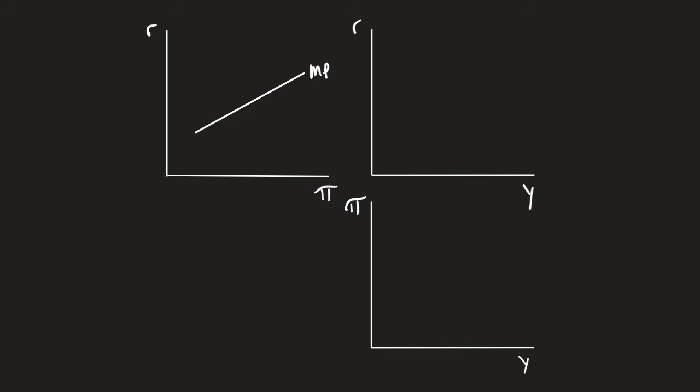We have the IS curve on the top right, which was downward sloping. The IS curve represented every point along Y, what the real interest rate is that will put the goods market in equilibrium.